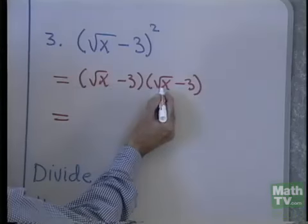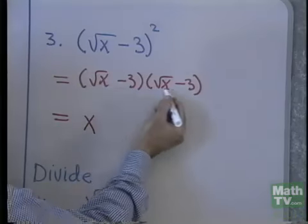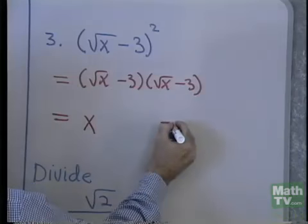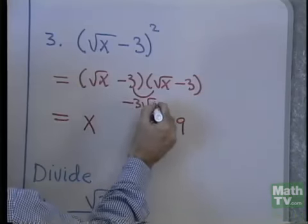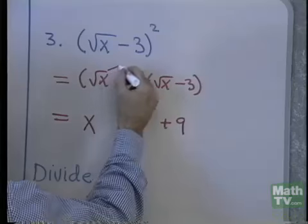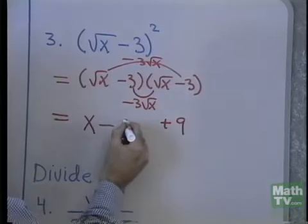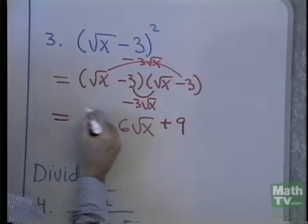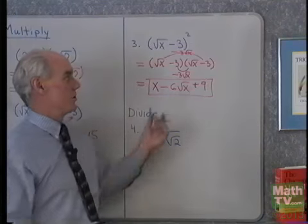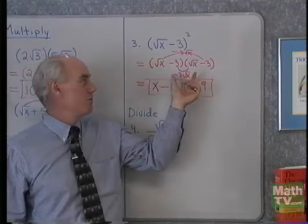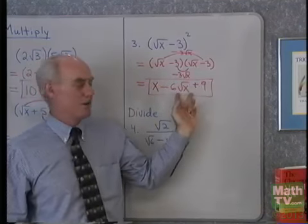So again, square root x times square root x is x. For the last term, minus 3 times minus 3 is positive 9. Inside: minus 3 square root x. Outside: minus 3 square root x. I add those and get minus 6 square root x. So I multiply these two just as if they were binomials, just like I did the problem just before this — multiply each term here by each term here. This is what we end up with.